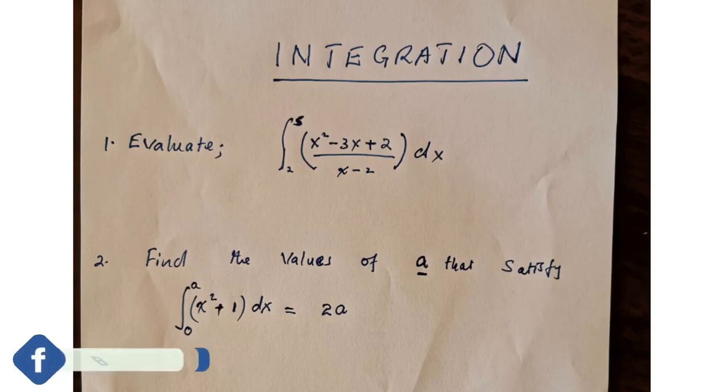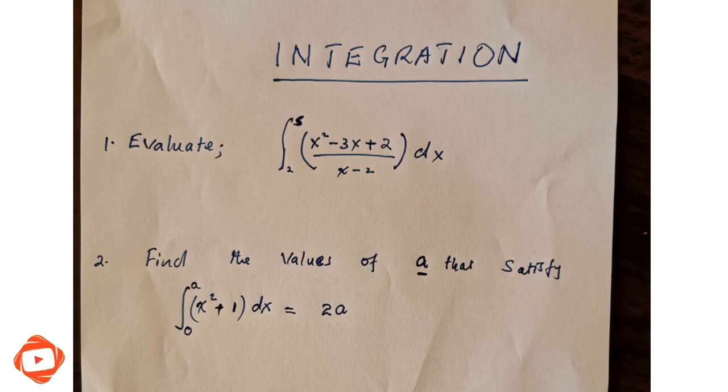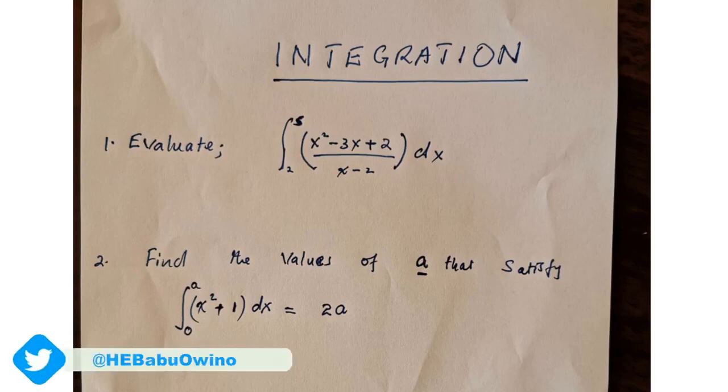So before you start integration you simplify what is in the bracket. We can see a quadratic expression. So the quadratic expression can be simplified by simply writing x squared minus 3x plus 2 divided by x minus 2.